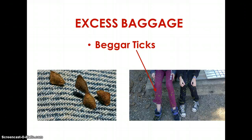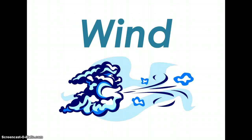Another way that animals disperse seeds is called excess baggage. There are some seeds, such as the beggar tick shown here, that attach themselves to an animal's hair or fur. The goal is that the animal moves away from the area, and at some distance it might rub up against a tree trunk, causing the seed to fall off and be planted in a different location. You can see in the picture that those are the legs of some students who went through an area and ended up with beggar ticks all over their pants.